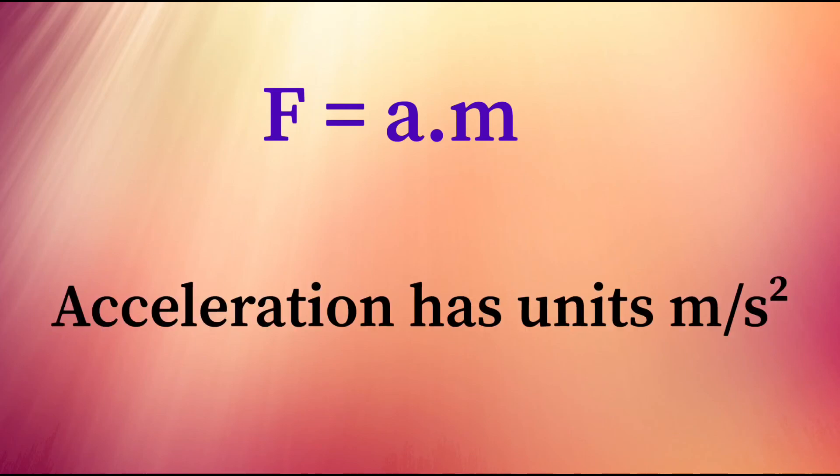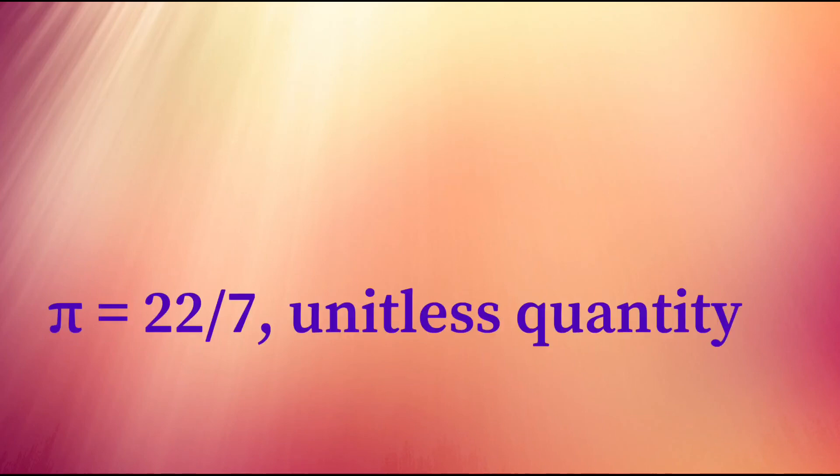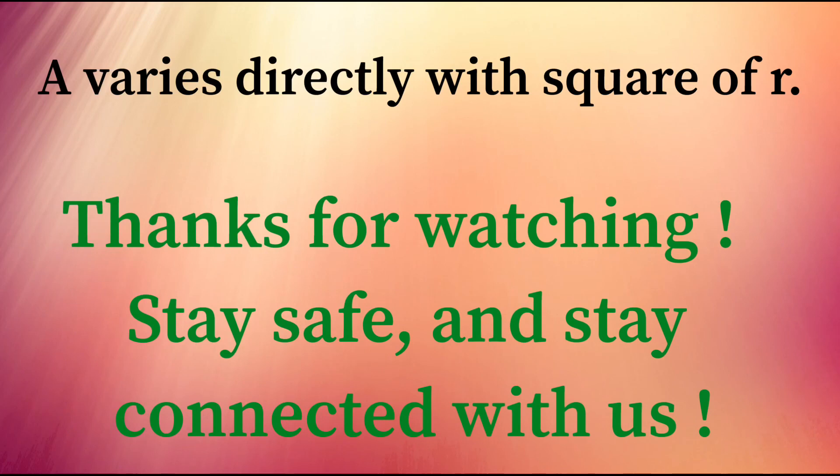Some proportionality constants don't have units and appear just as a number. For example, area of a circle having radius r is A equals pi r squared. Here, pi is a unitless quantity used as proportionality constant, and A varies directly with the square of r.